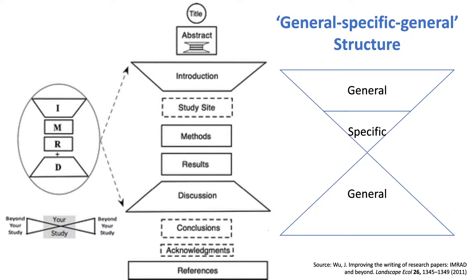We can simplify this and think of the IMRAD structure as a general-specific-general structure. Our introduction should generally introduce what our research is about before getting down to its specific aims, hypotheses, or objectives. We then focus on the very specific methods and results of our research, or perhaps go through a literature review developing ideas from a conceptual or theoretical background. As we come into our discussion, we want to generalize again — how are the results of our research generally applicable to others within our field?